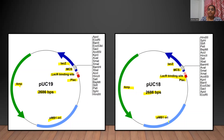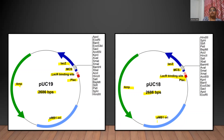The pMB1 origin of replication in pUC-18 and pUC-19 differs from the origin of replication in pBR322 by one base pair — that is, there is a point mutation in the pMB1 origin of replication. That point mutation allows both plasmids to be high copy number plasmids.